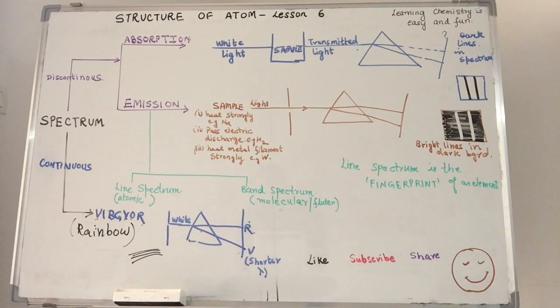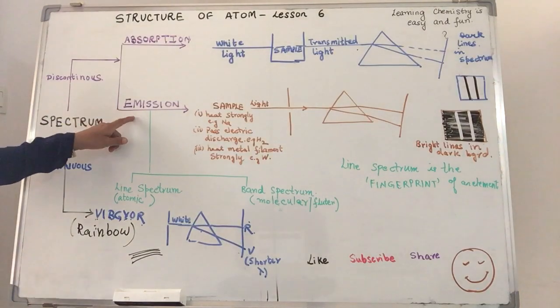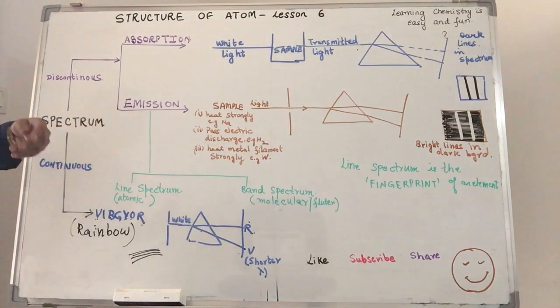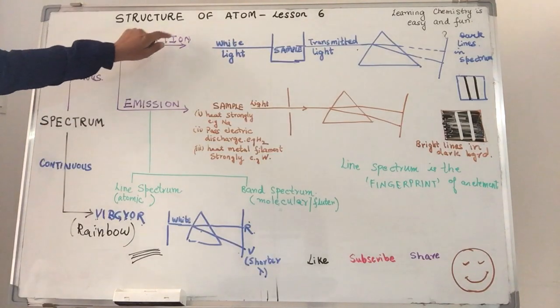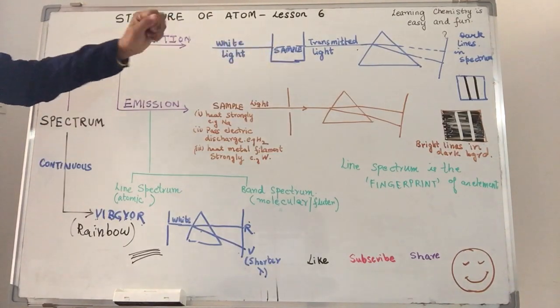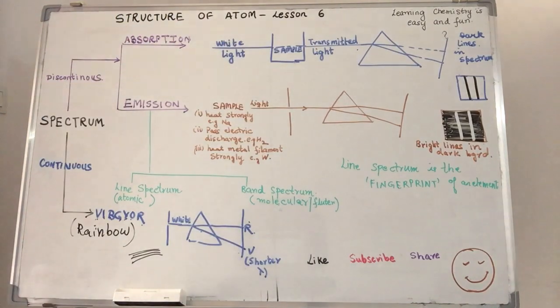Then we go on to the second one, the emission spectrum. When what lights are emitted or given out by the sample? Here what we have done is we have taken white light and passed through the sample. So some portion of that white light is absorbed.